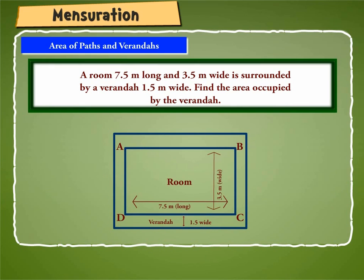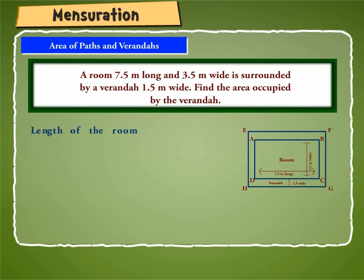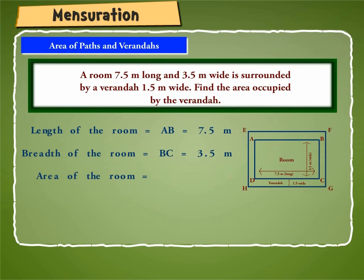For that, let ABCD be the room and EFGH be the boundaries of the veranda. Therefore, length of the room is equal to AB is equal to 7.5 meter. Breadth of the room is equal to BC is equal to 3.5 meter. Area of the room is equal to area of ABCD is equal to length into breadth, which is equal to 7.5 into 3.5 square meter, that comes out to be 26.25 square meter.